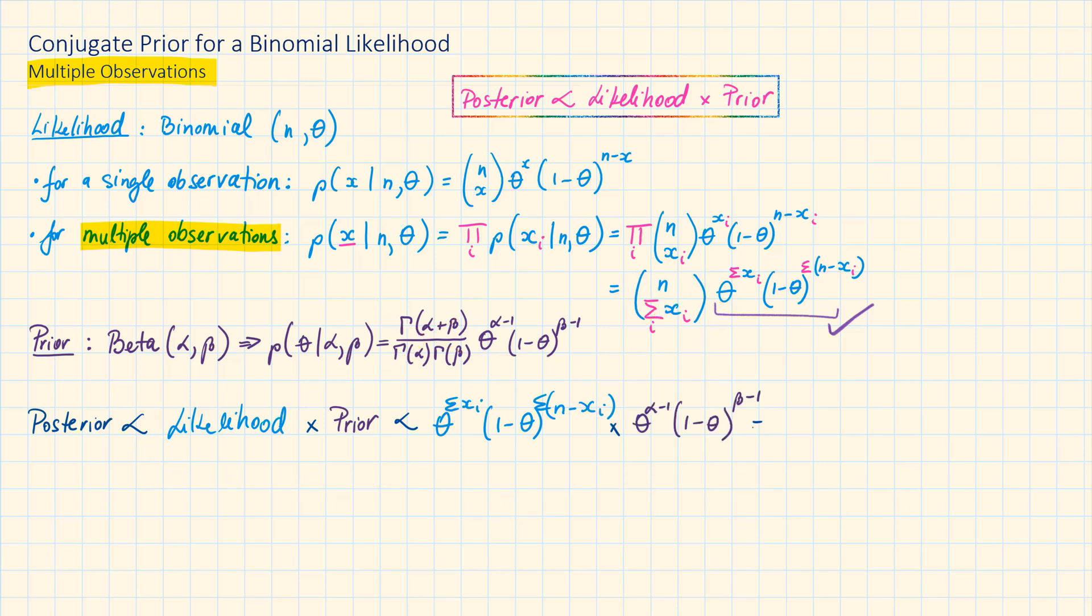Now, simplifying this further, we can add the powers of theta to get theta to the power of alpha plus the sum of x's minus 1. Then, add the powers of 1 minus theta. This becomes 1 minus theta to the power of beta plus the sum of n minus xi minus 1.